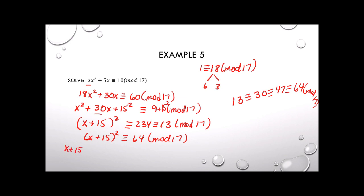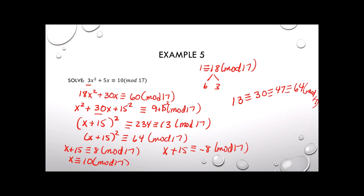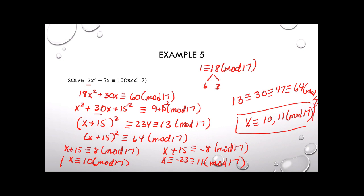So x plus 15 is congruent to 8 mod 17, or x plus 15 is congruent to negative 8 mod 17. Subtracting 15: x is congruent to 8 minus 15, which is negative 7, same as 10 mod 17. Or x is congruent to negative 8 minus 15, which is negative 23, and adding 17 twice gives 11 mod 17. So the solutions are x congruent to 10 and 11 mod 17. You can plug them in to verify.